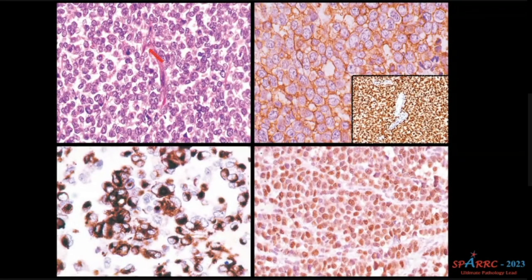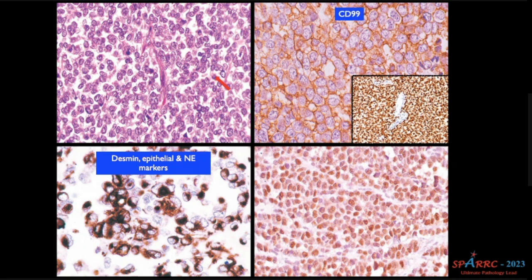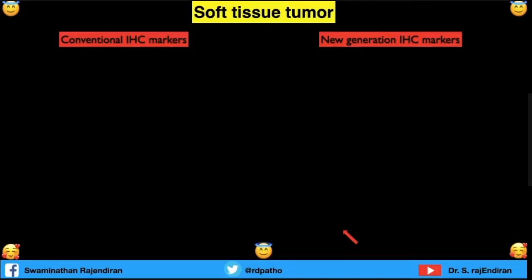This is a small blue cell tumor and this is a composite picture. What is the marker that determines the diagnosis? If it is CD99 positive in a net-like fishnet pattern and NKX2.2 is positive, it is Ewing's. When desmin, epithelial, and neuroendocrine markers are positive, it is desmoplastic small cell tumor. When myogenin is positive, it is rhabdomyosarcoma. Please remember the H&E morphology may be the same — depending upon the IHC, we make the differential diagnosis and pinpoint the diagnosis.